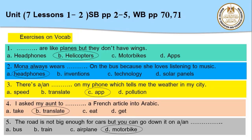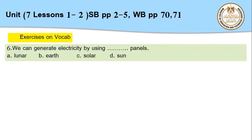Number six: we can generate electricity by using [blank] panels — lunar, earth, solar, or sun panels. The new word here is 'generate,' which means يولد, and 'generator' means مولد الكهرباء. 'Lunar' comes from the word 'moon.' 'Solar' comes from the word 'sun' and means شمسية. So the correct answer is 'solar panels.'